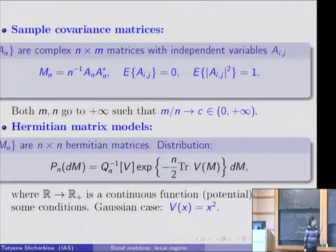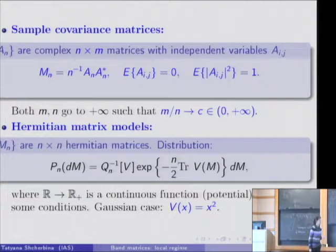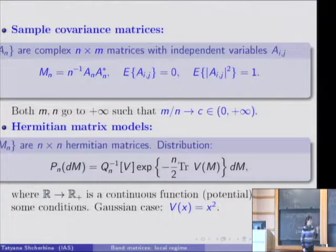Other important example of the Hermitian matrix ensemble can be obtained if we take complex rectangle n times m matrices with independent complex variables A_ij. Again, it can be Gaussian and then it's a Gaussian sample covariance matrix, it can be non-Gaussian, then this is the general covariance matrix, and then we consider the matrices A A star. Here we assume that the ratio of the dimensions of this rectangle should tend to some constant c.